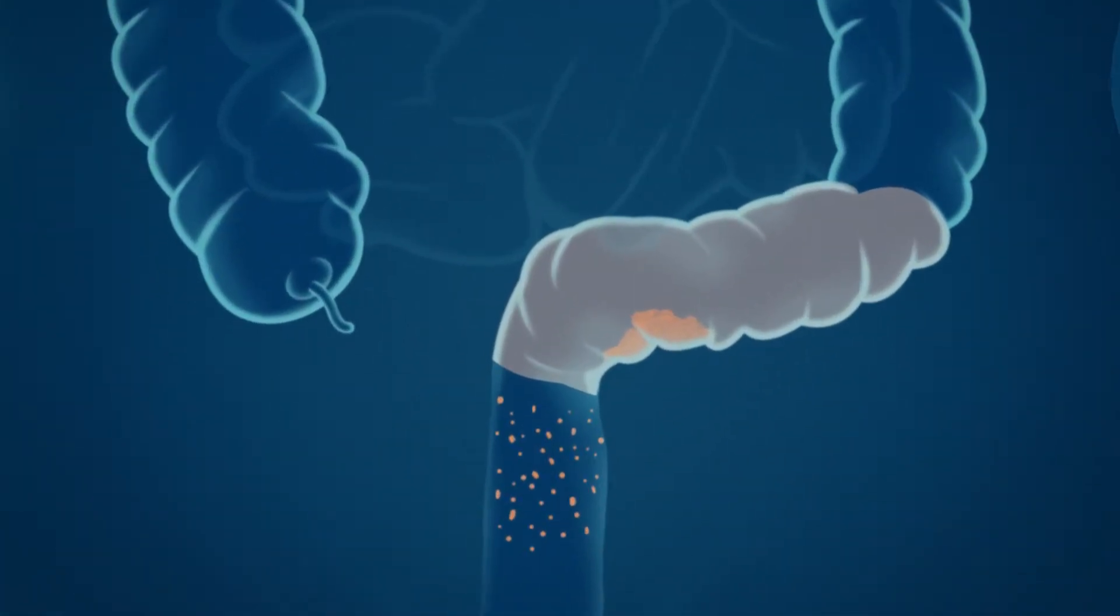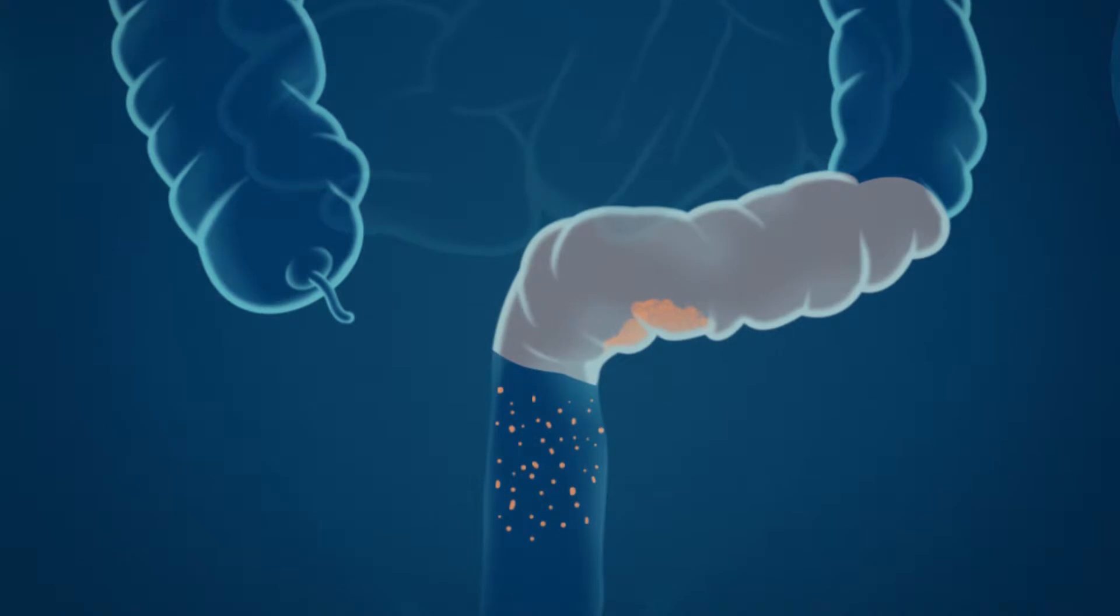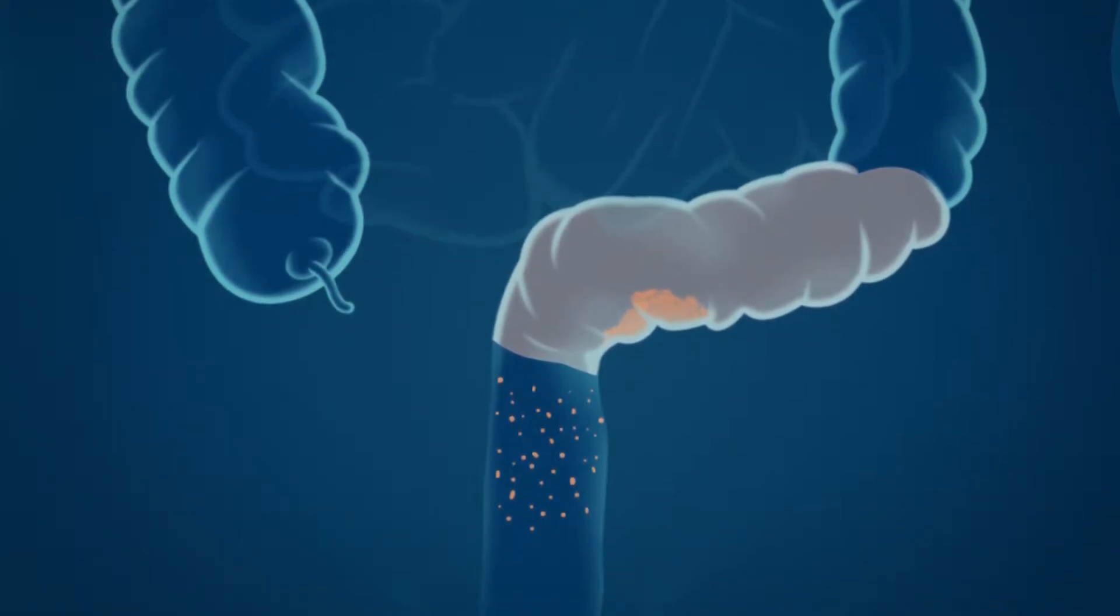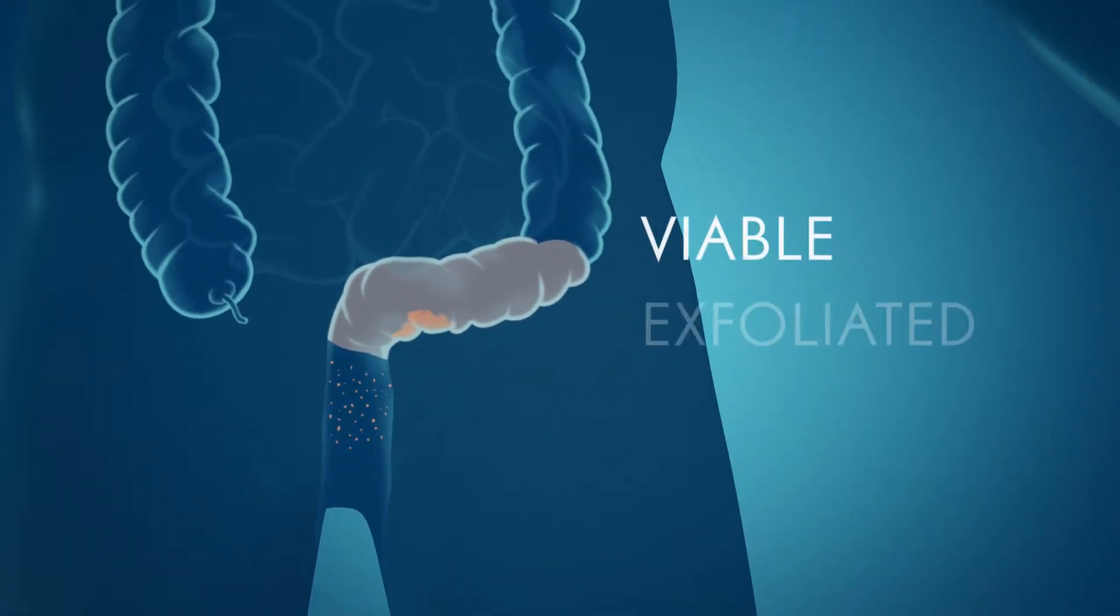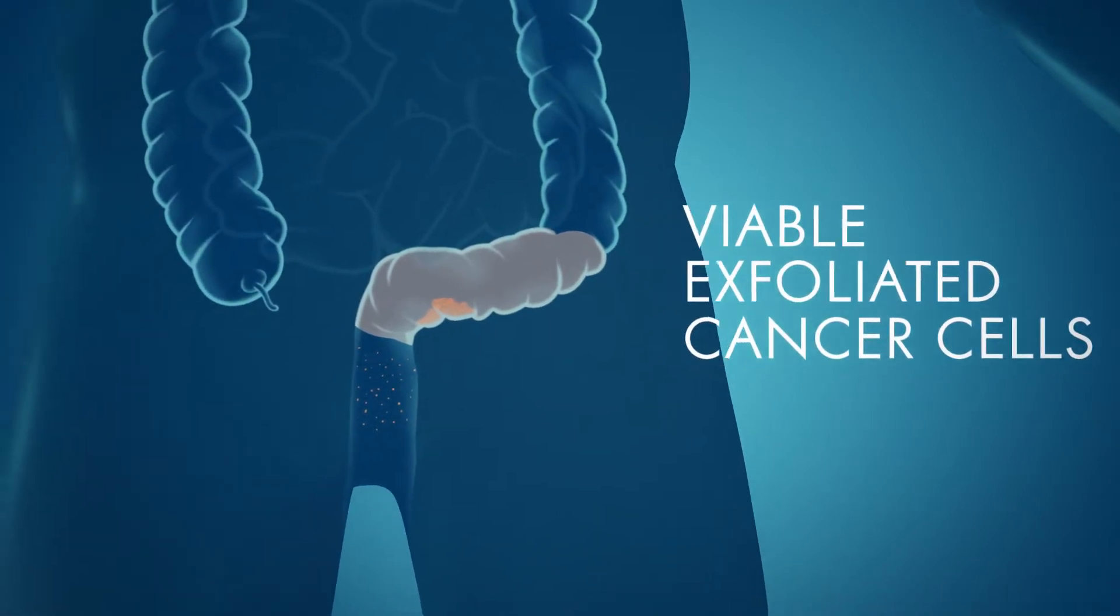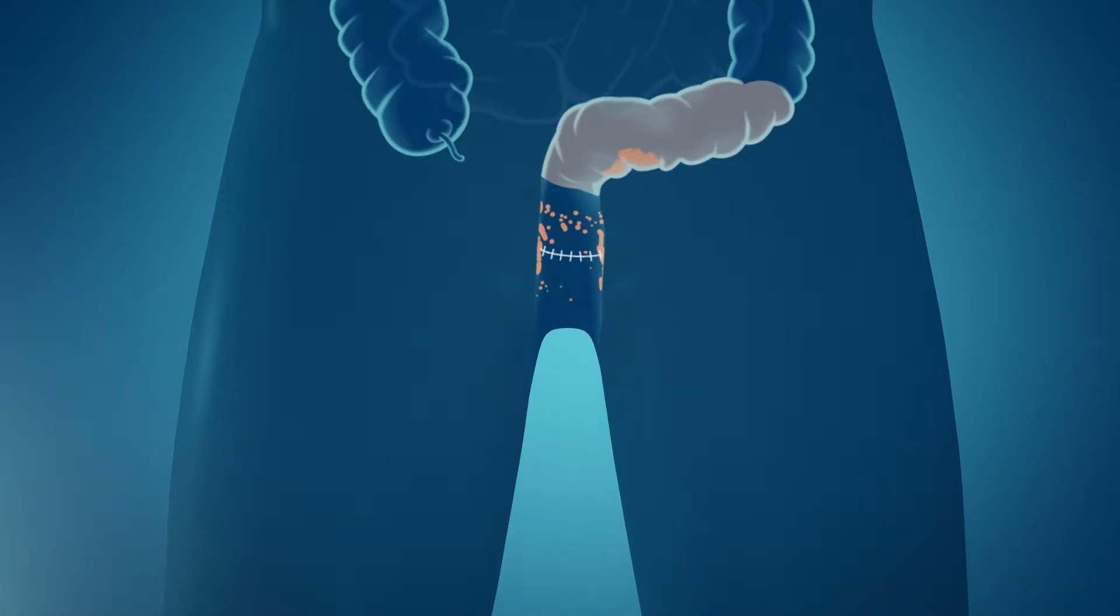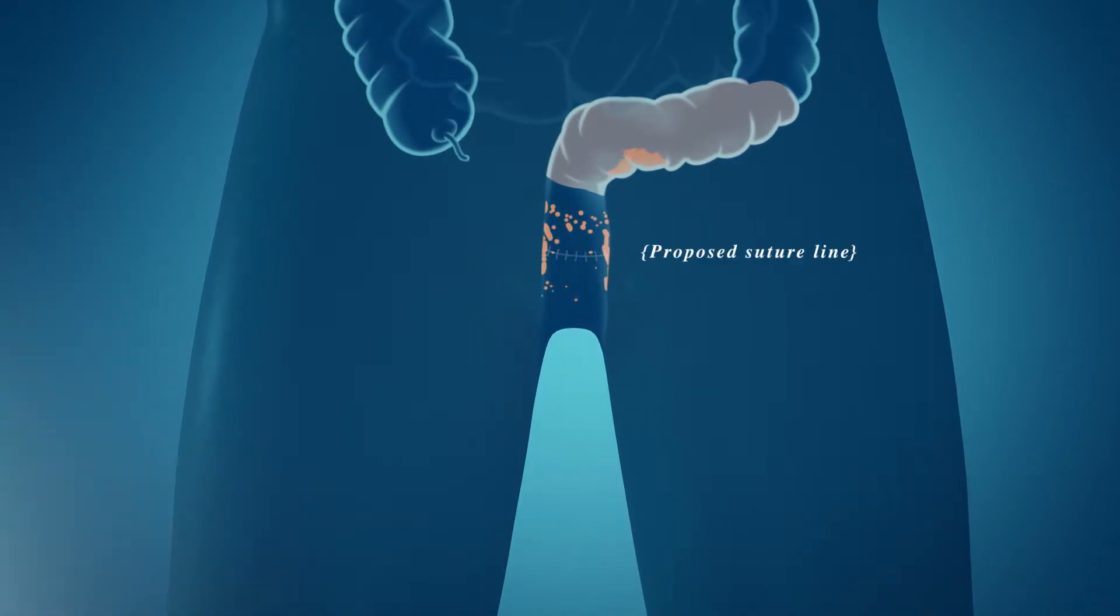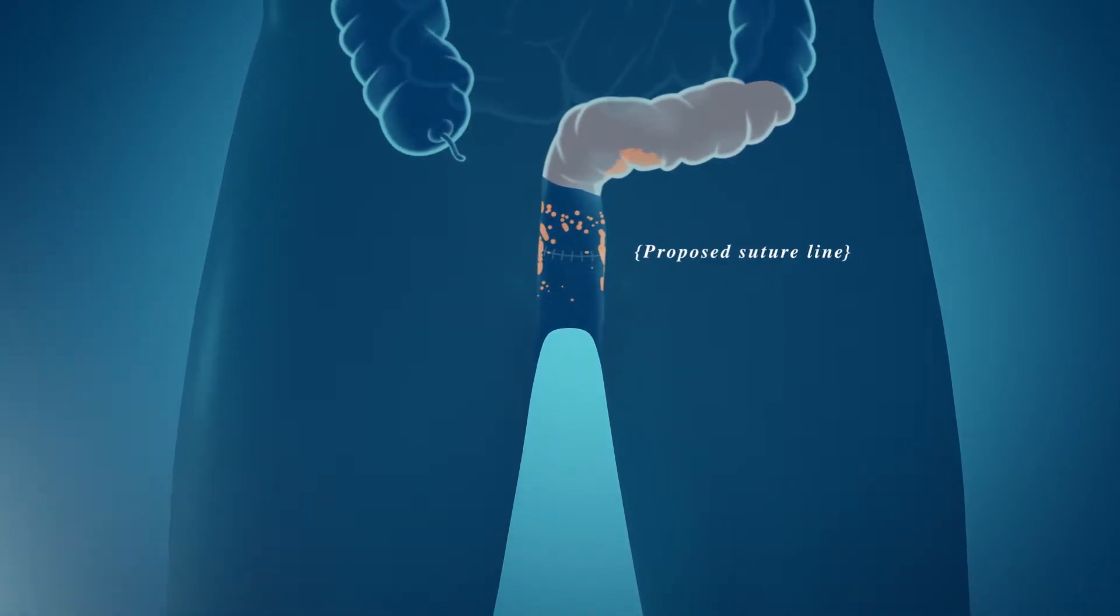It's critical to ensure adequate clearance of the disease to minimize the risk of recurrence. One of these risks is the presence of viable exfoliated cancer cells shed by the tumor into the rectum below. These may seed in the wall of the rectum or be implanted in the suture line of the anastomosis by the circular stapler.